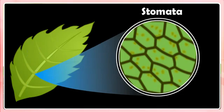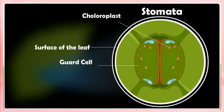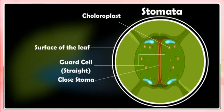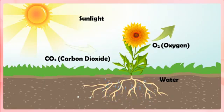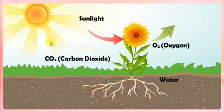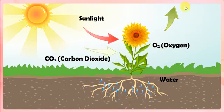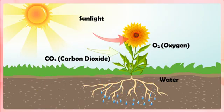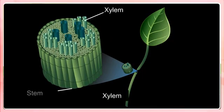Photosynthesis. Each pore is surrounded by a pair of guard cells. The opening and closing of stomatal pores in the leaves is controlled by the guard cells. Carbon dioxide gas present in air enters the leaves through stomatal pores, and plants take water needed for photosynthesis from the soil. Water is absorbed by the roots and transported to the leaves through vessels running throughout the roots, stem, branches and leaves. These tiny pipe-like vessels are called xylem.